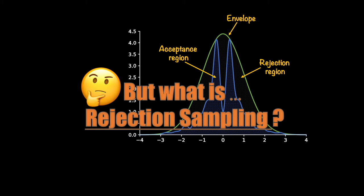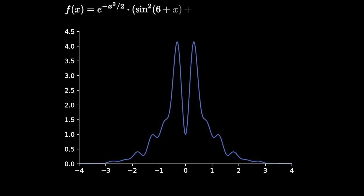I will explain the intuition and math behind this algorithm using a difficult to sample univariate distribution. And this difficult to sample univariate distribution looks like this. It was generated using the function shown above.